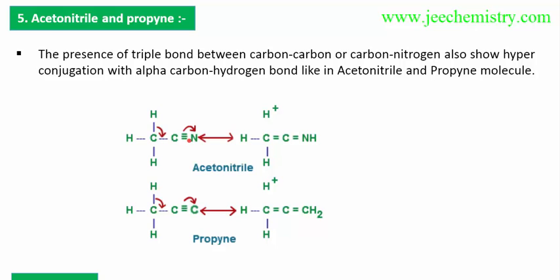Here there are two pi bonds, but only one will participate in hyperconjugation. This pi bond shifts to this position — this becomes minus, this becomes plus — this minus-plus forms a bond. Because this is happening in solution, and there are lots of H-plus in the surroundings, the carbanion (C minus) is not very stable.